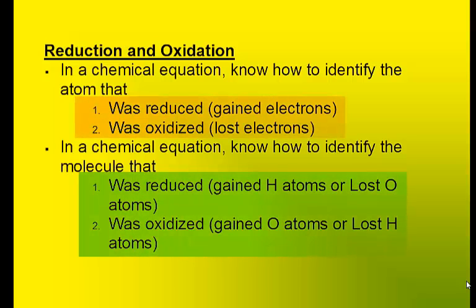There are two ways to describe reduction and oxidation. One way is in terms of electrons being transferred from one atom to another. When an atom is reduced, it's said to have gained electrons. When an atom is oxidized, it's said to have lost electrons.